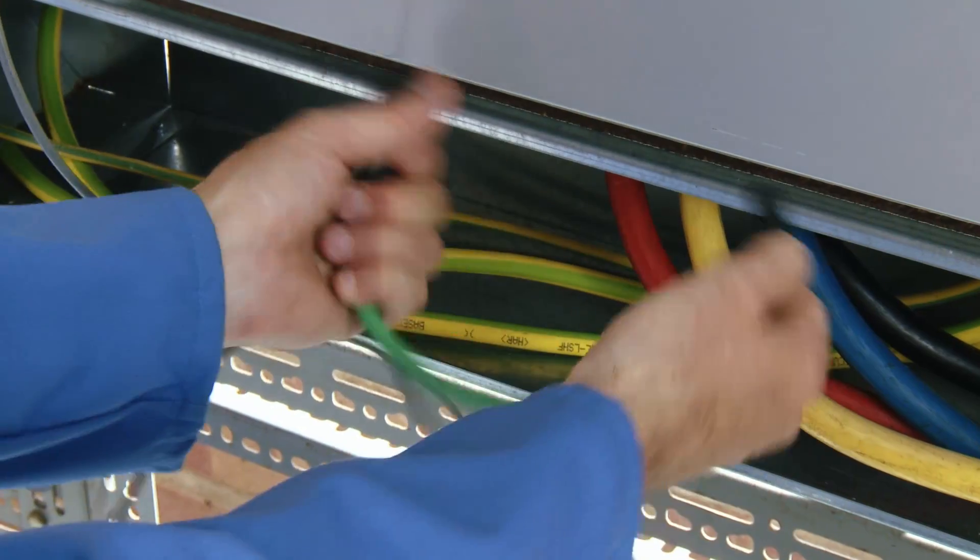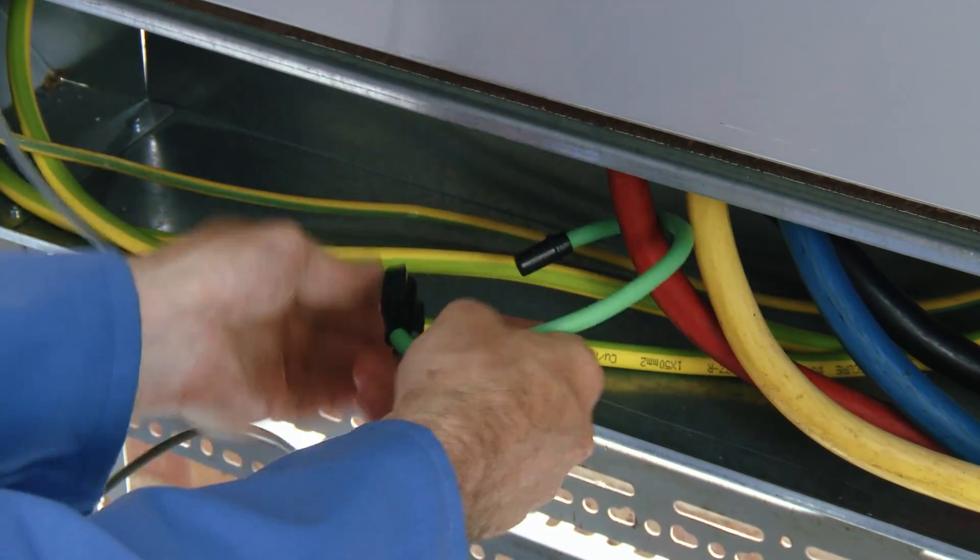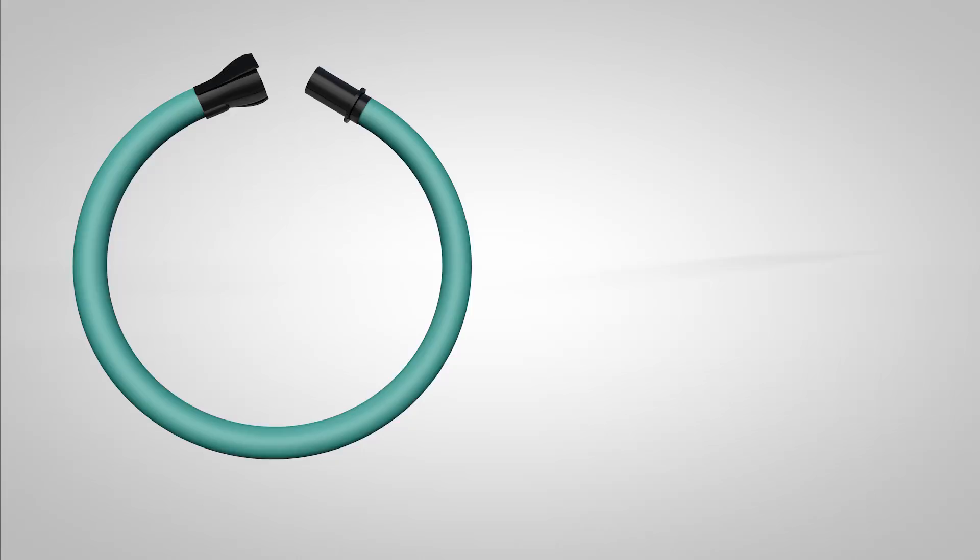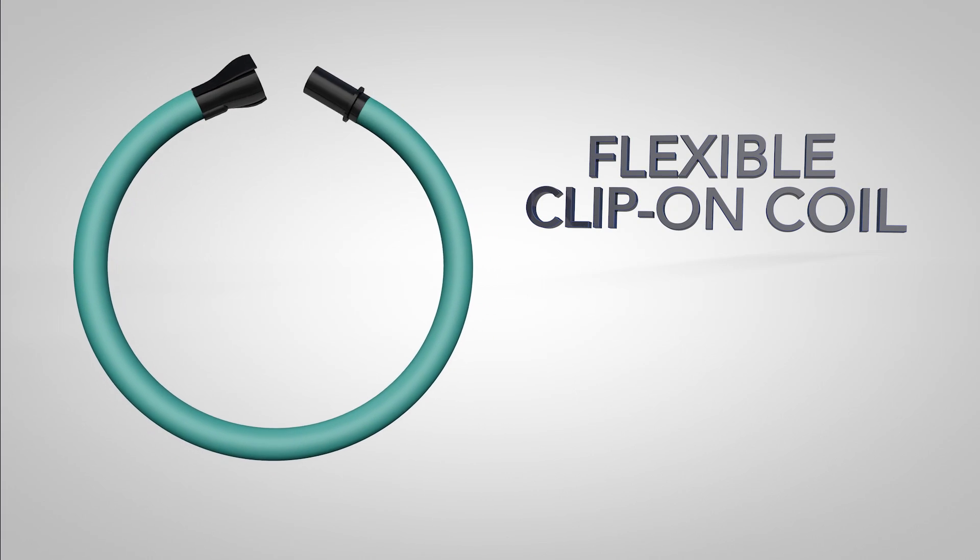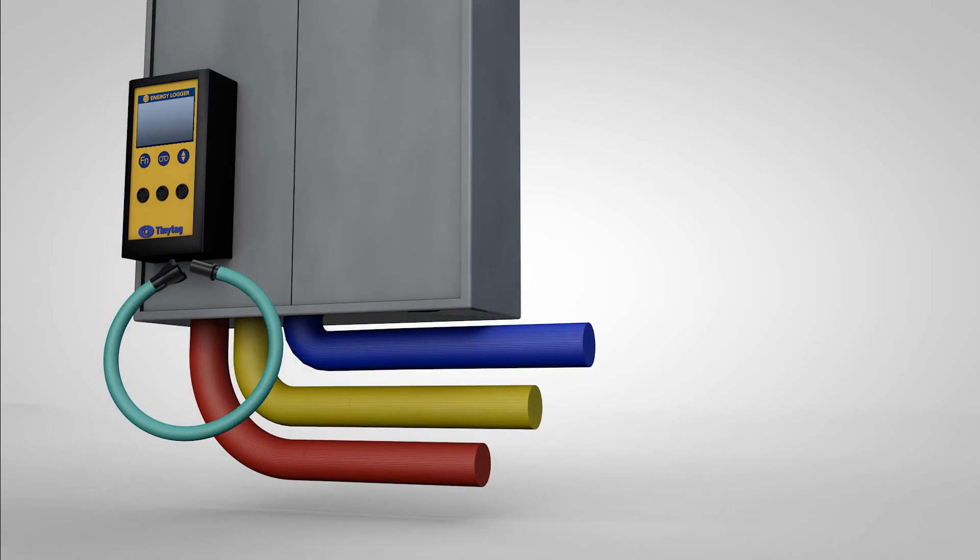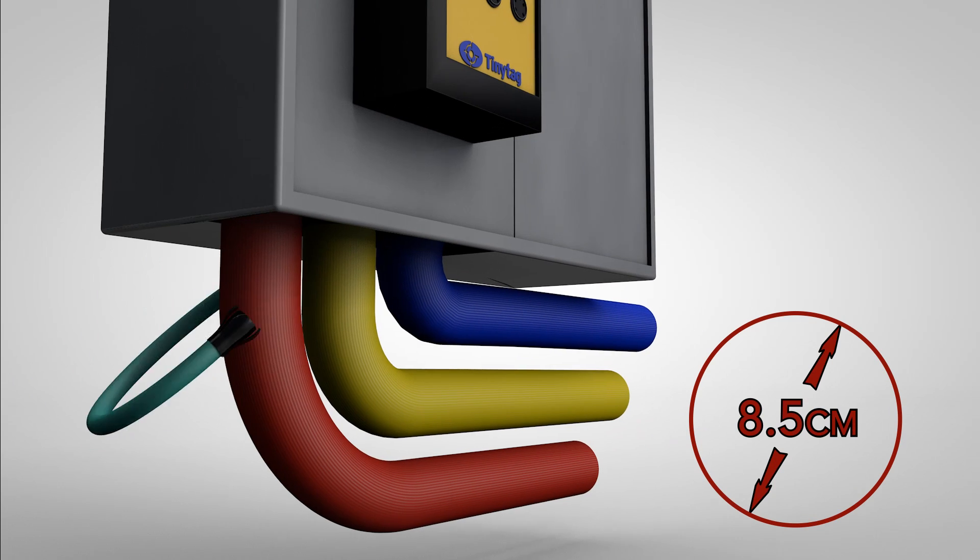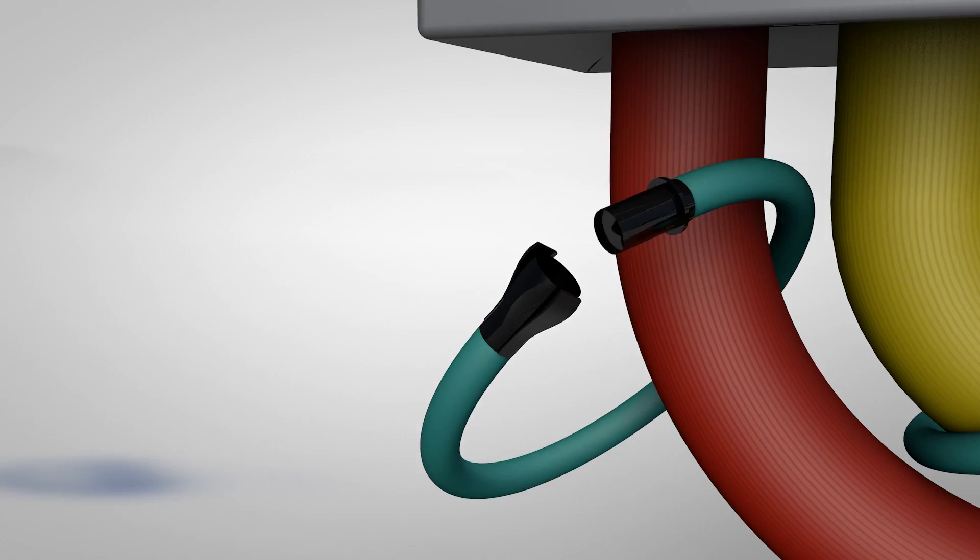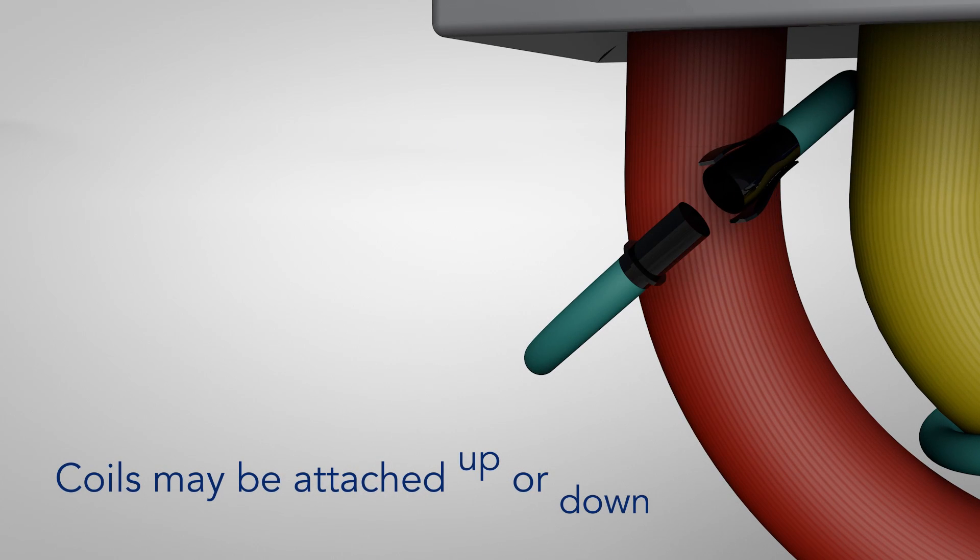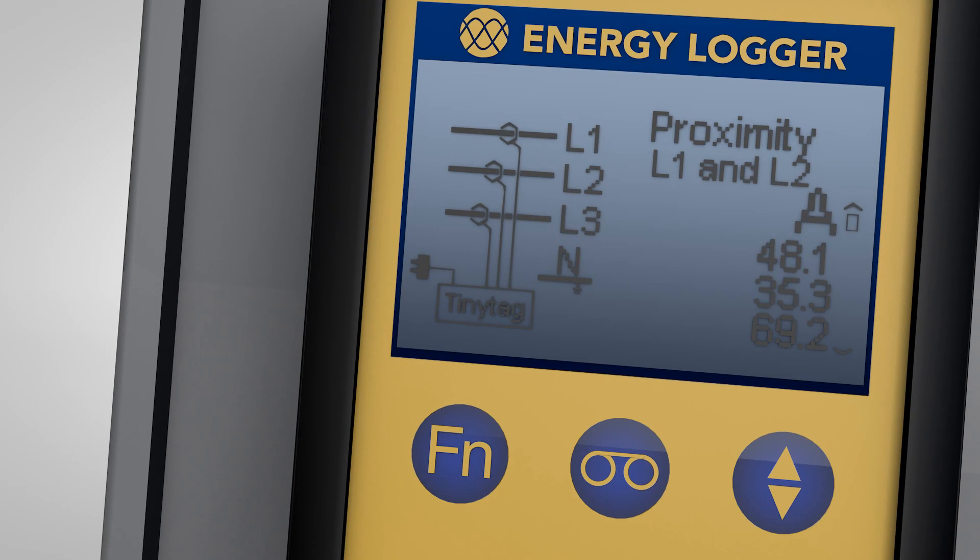Then connect the coils. These are flexible to allow easy positioning into small or awkward spaces. They are large enough to go around conductors of up to 8.5cm in diameter. The coils can be clipped around the cables either way up as the logger will automatically detect which way the current is flowing and adjust accordingly.